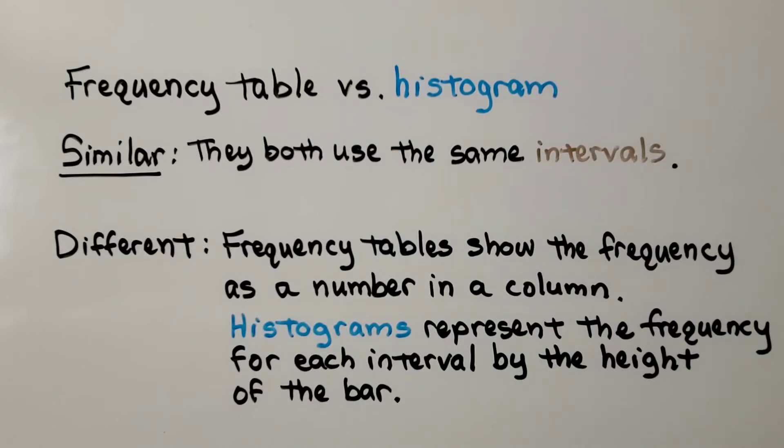So let's compare a frequency table versus a histogram. They're similar because they both use the same intervals. And they're different because frequency tables show the frequency as a number in a column. Histograms represent the frequency of each interval by the height of the bar.